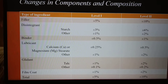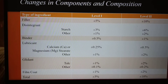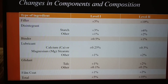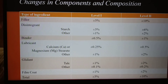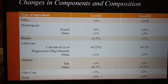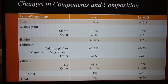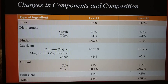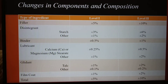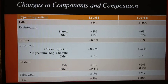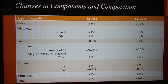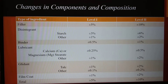In case of glidant, if it is talc, the allowed change is up to 1%, and for other glidants it's 0.1%. For film coating components, the allowed change as per SUPAC Level 1 is 1%, and the cumulative changes should be not more than 5%. That covers Level 1 changes.